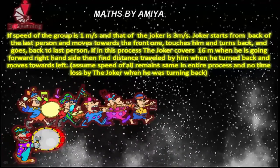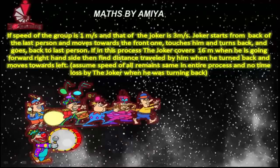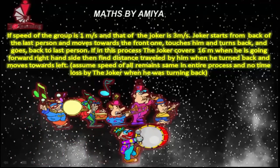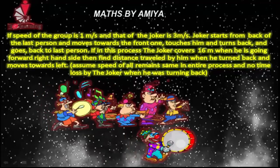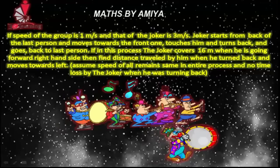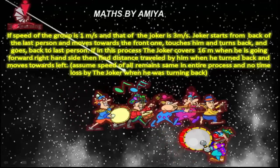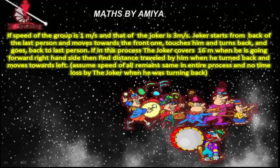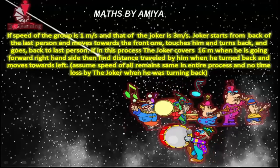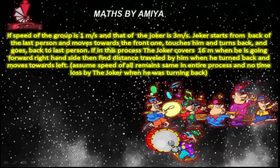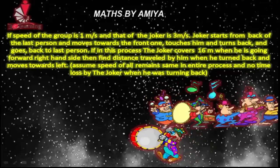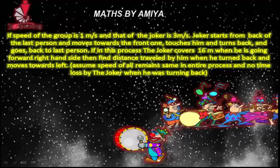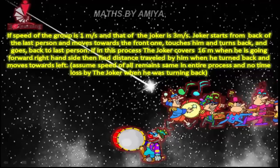The question is: if the speed of a group is 1 meter per second and that of the joker is 3 meters per second, the joker starts from the back of the last person and moves towards the front one, touches him, turns back, and goes back to the last person. If in this process the joker covers 16 meters going forward (right hand side), find the distance travelled when he turns back and moves towards the left. Assume speed remains constant throughout and no time is lost when turning back.